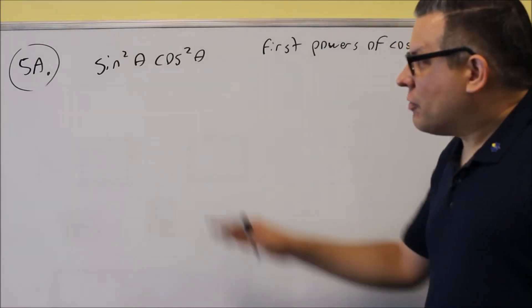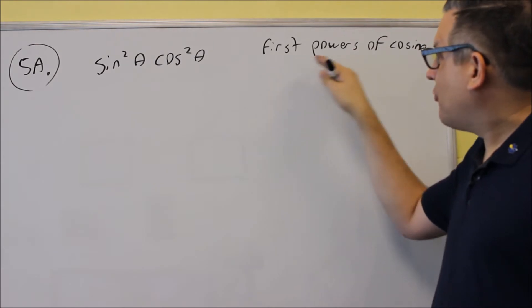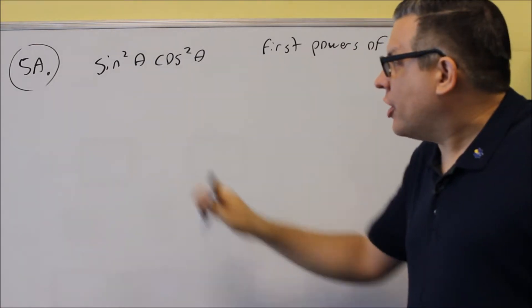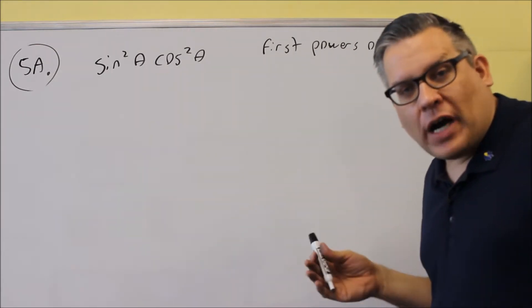Number 5 is going to have you use the power reducing formulas, and the directions ask you to write it as first powers of cosine. So we're getting rid of the squares and writing it all in terms of cosine raised to the first power.